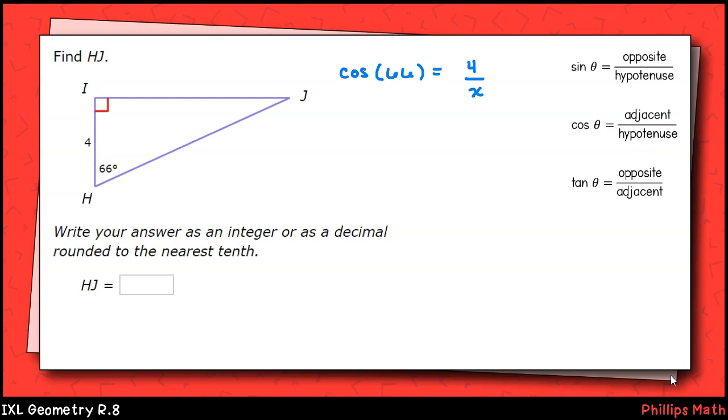To set this up, we'll have cosine of 66 degrees equals 4 over the hypotenuse, which we'll call x. Using algebra, we'll solve this equation for x, which gives us x equals 4 over cosine 66.